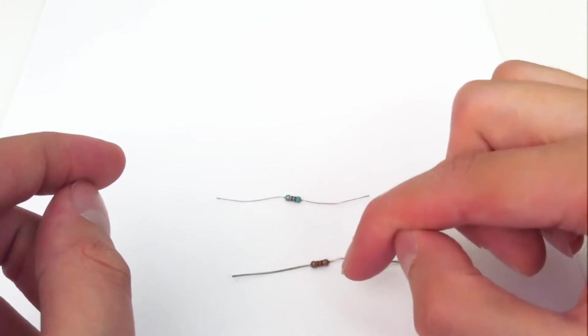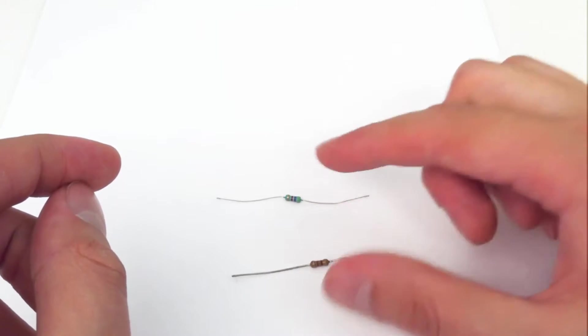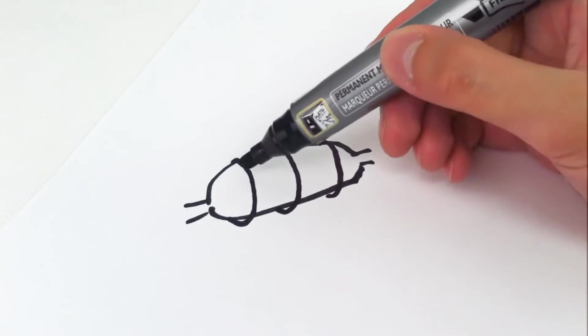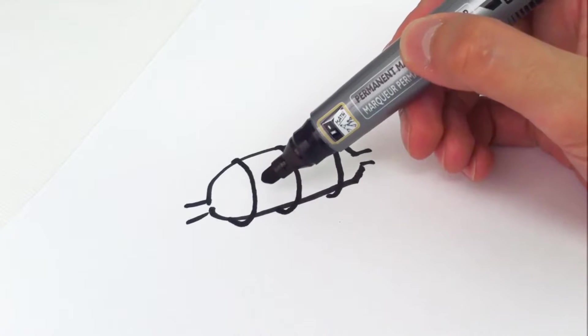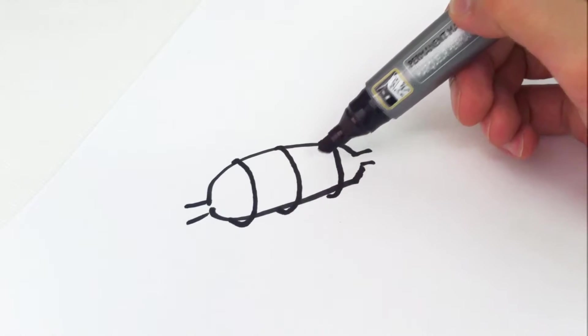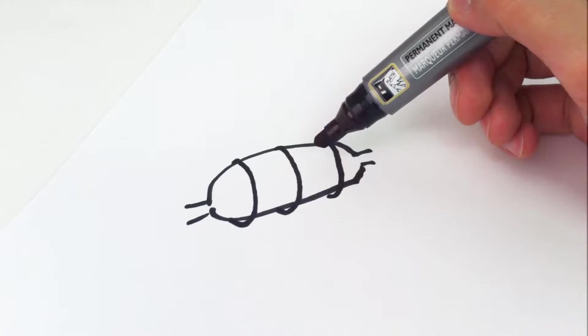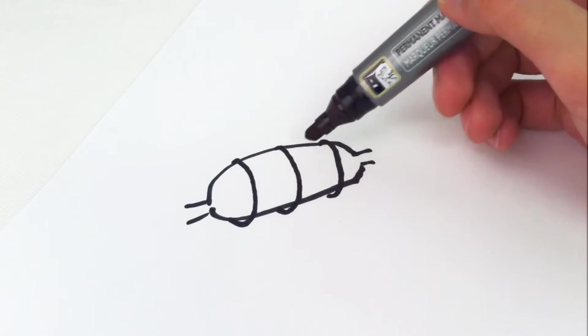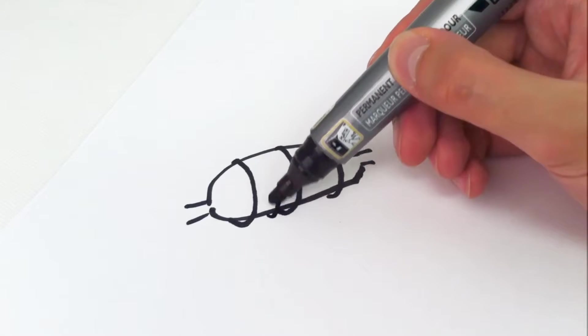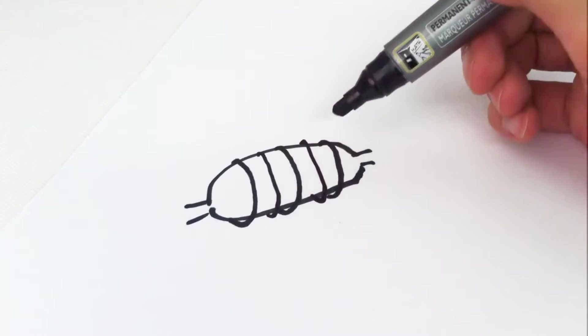Now if we were to scratch off the layer of paint on the outside, what we'd see is this. We have an insulating rod with spirals of conducting material. Now just like a loop of wire, these spirals of conducting material, which can sometimes be cut into the resistor with lasers, offer a longer path and hence more resistance to the flow of electrons, and the greater the number of spirals, the greater the resistance.